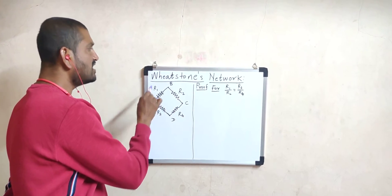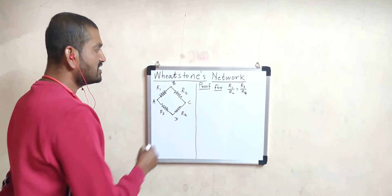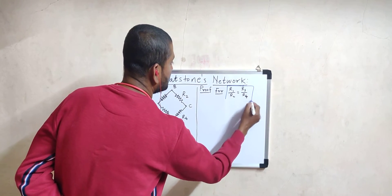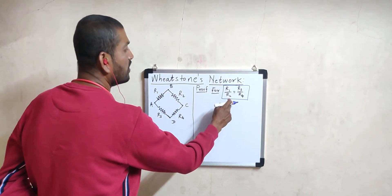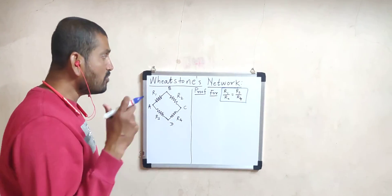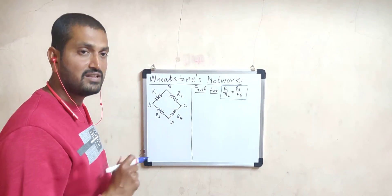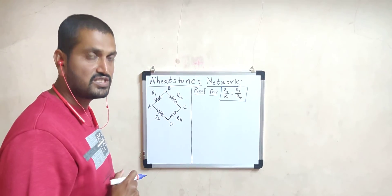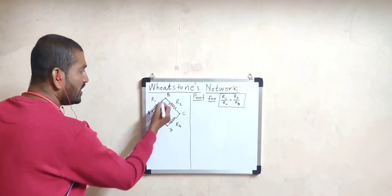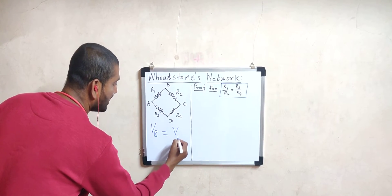This arrangement itself is called Wheatstone's network. When it is a balanced network, it states that the four resistors are related to each other by the formula R1/R2 = R3/R4. Wheatstone's network is said to be balanced when the potential at point B is exactly equal to the potential at point D.